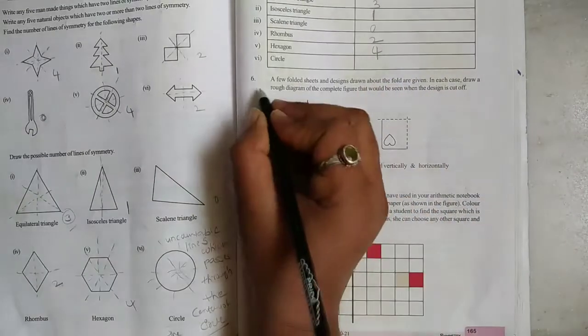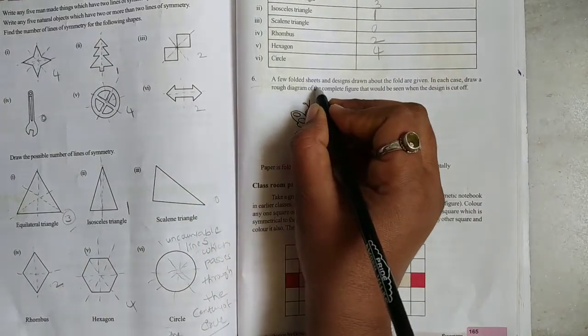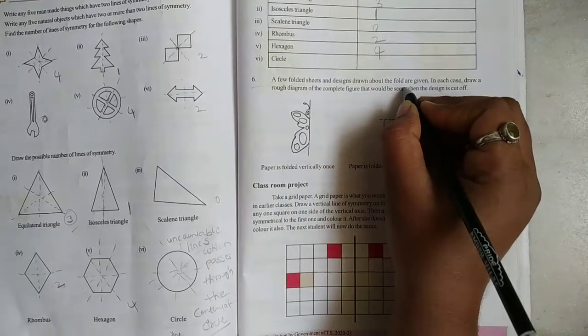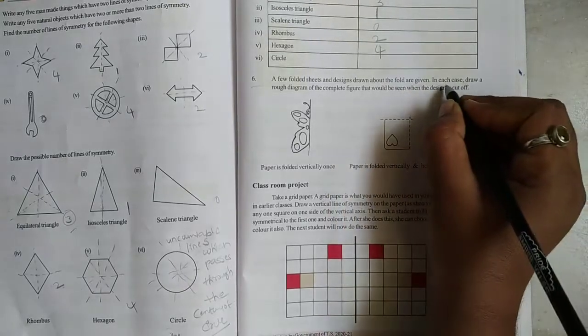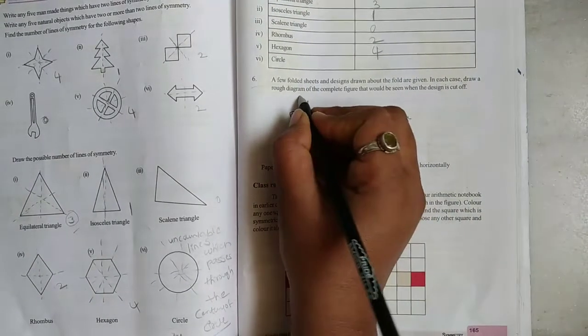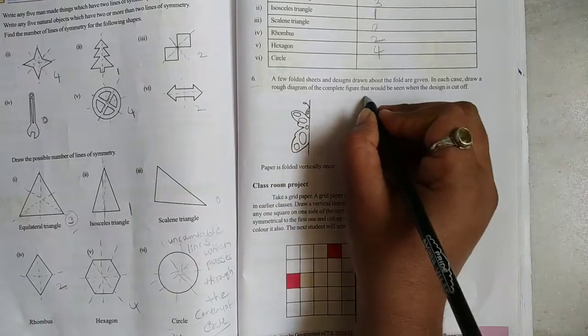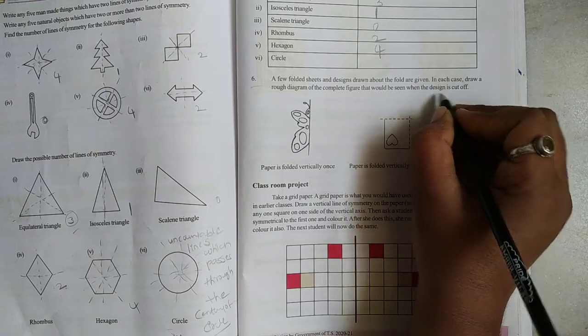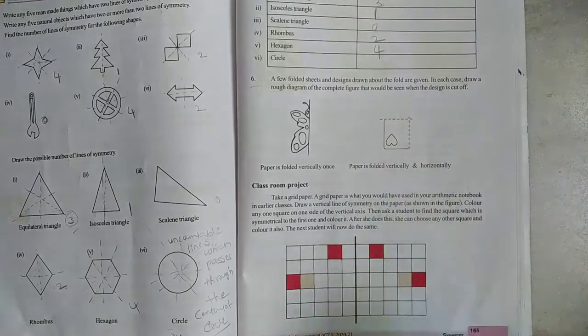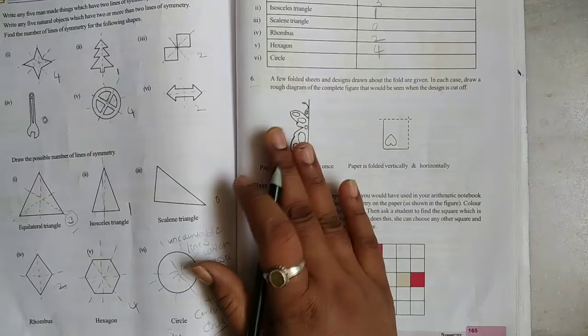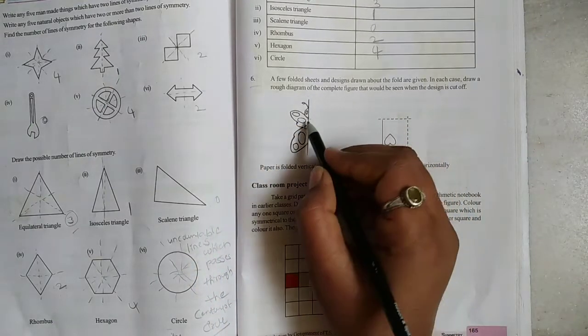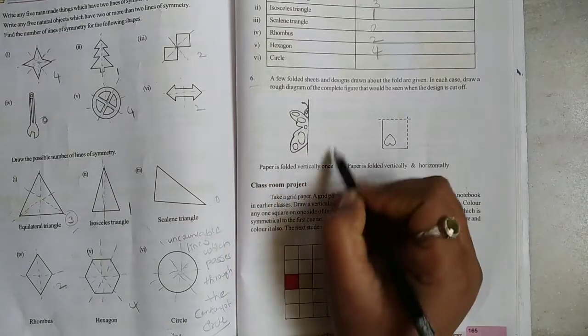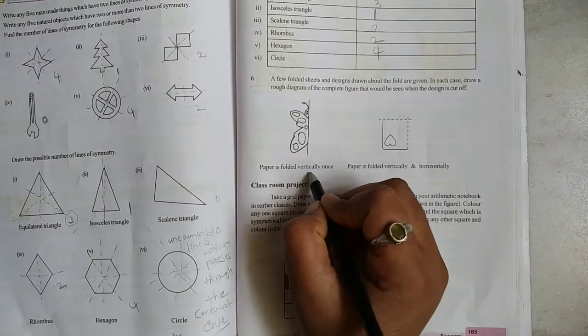Next, sixth one: a few folded sheets and designs drawn about the fold are given. In each case, draw a rough diagram of the complete figure that would be seen when the design is cut off. Just, this is the original figures, rough, complete. Take a paper and fold vertically.